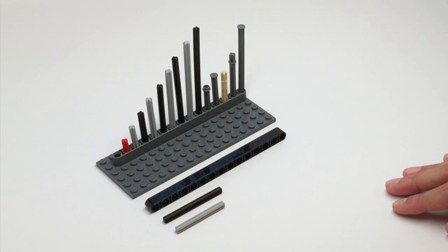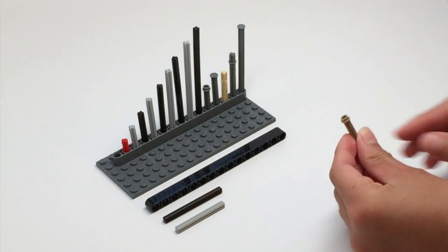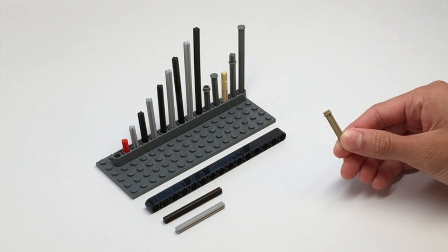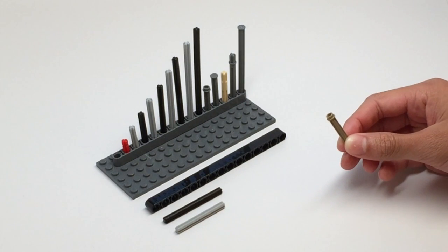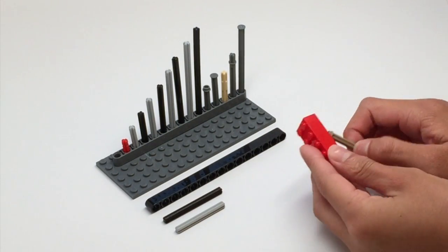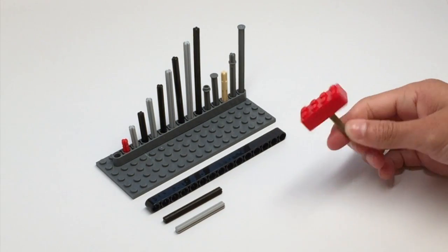Special axles are axles that have just a little addition to them. Right now we have a length three axle with a stud on top, and the stud allows you to attach regular LEGO pieces on top like that.